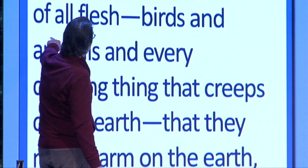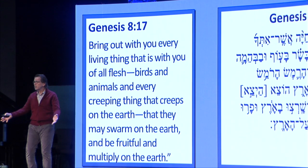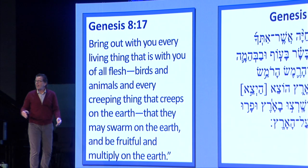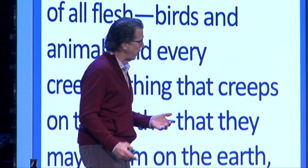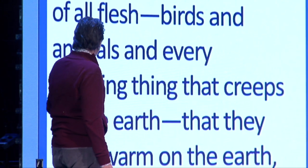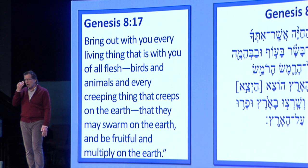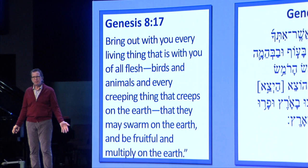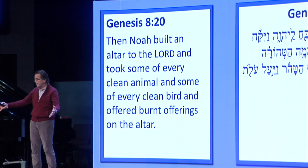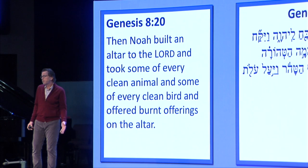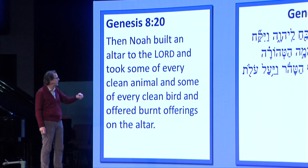God said: 'Bring out with you every living thing that's with you of all flesh — birds and animals and every creeping thing that creeps.' Those are the things God made in the creation story. Birds and animals — the only thing left out is fish, because the flood didn't kill all the fish; they kind of thrive in a flood. 'That they may swarm on the earth and be fruitful and multiply on the earth.' The language of creation is being echoed here as the world has been re-created out of a big bath.